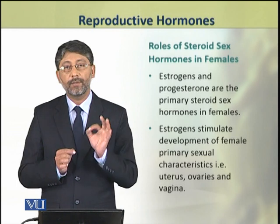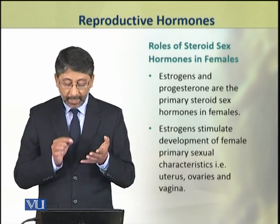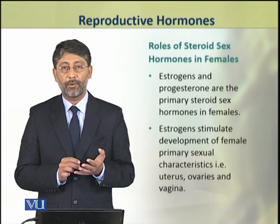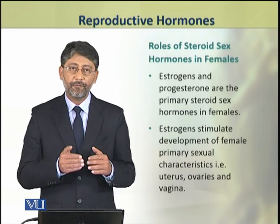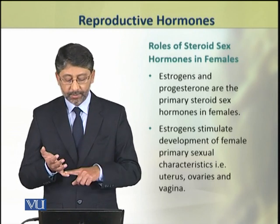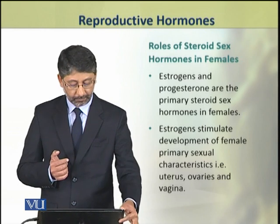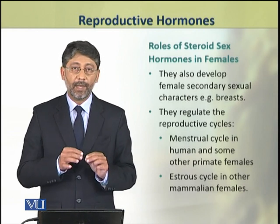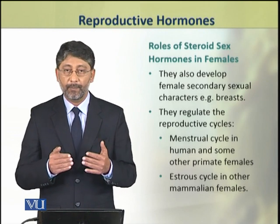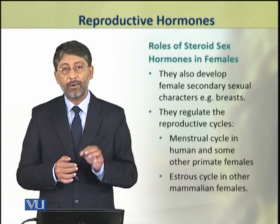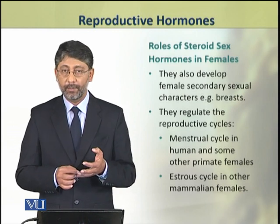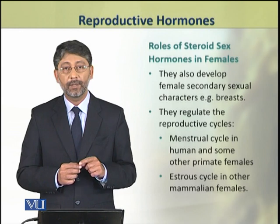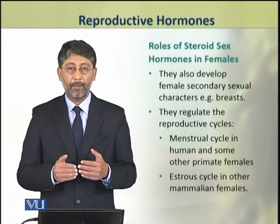Now we shall discuss the role of steroid sex hormones in females. Estrogens and progesterone are the primary steroid sex hormones in females. They stimulate the development of female primary sexual characters — for example, uterus, ovaries, and vagina. These hormones also develop the secondary female sexual characters, such as the development of breasts. They also regulate the reproductive cycles — that is, the menstrual cycle in humans and some other primate females, and the estrous cycle in all other mammalian females.